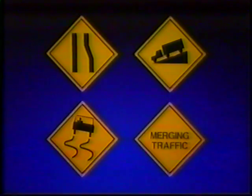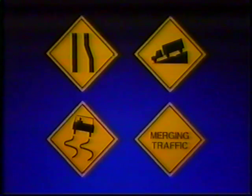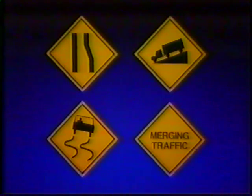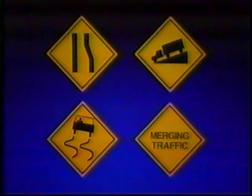Some signs are straightforward. The sign in the upper left means the right lane is about to disappear. The upper right means there's a steep hill ahead. The lower left means the surface gets very slick when wet. The sign at the bottom right may be hard to make out, but the diamond shape means it's a warning of some kind — that should be enough to put you on your toes.